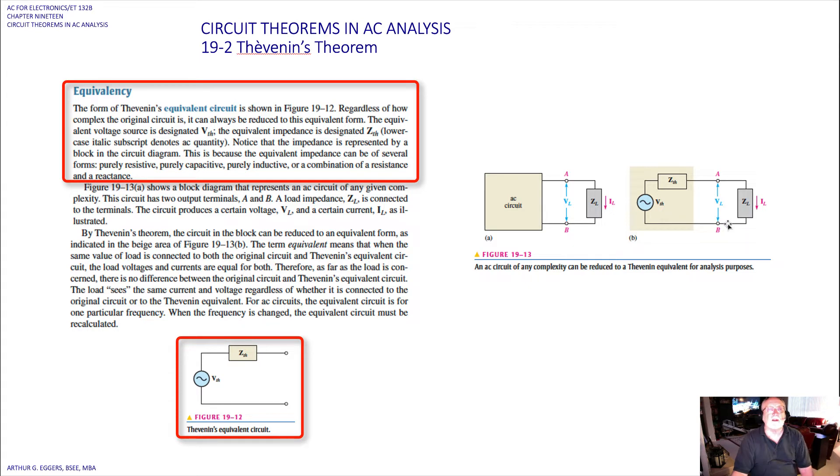The form of Thevenin's equivalent then is shown in figure 19-12, where we have a Thevenin's equivalent source and a Thevenin's equivalent resistance. Regardless of how complex the original circuit is, it can always be reduced to this equivalent form. The equivalent voltage source is designated V_Thevenin, the equivalent impedance is designated as Z_Thevenin.